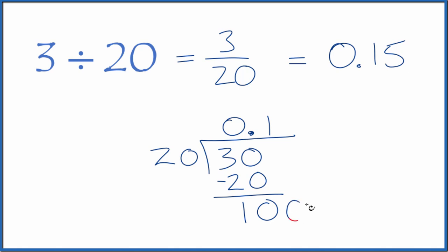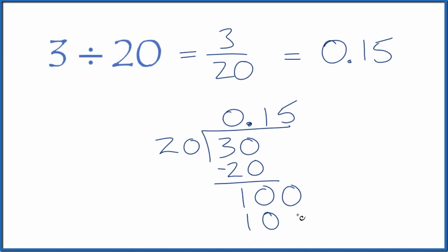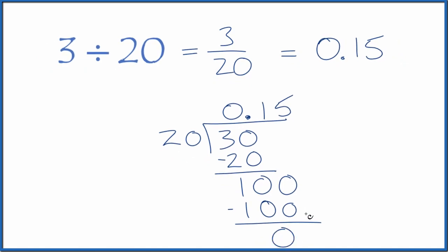20 doesn't go into 10. Call it 100. Move over 1. 5 times 20, that is 100. Subtract, no remainder.